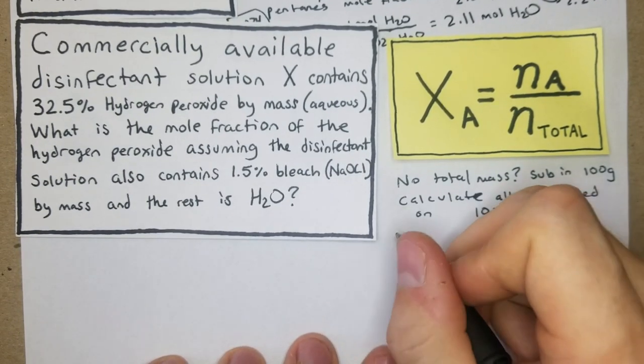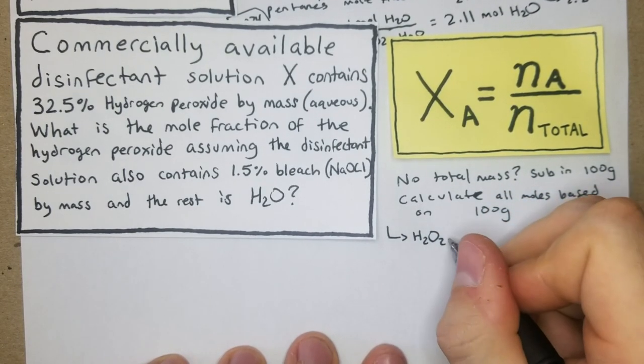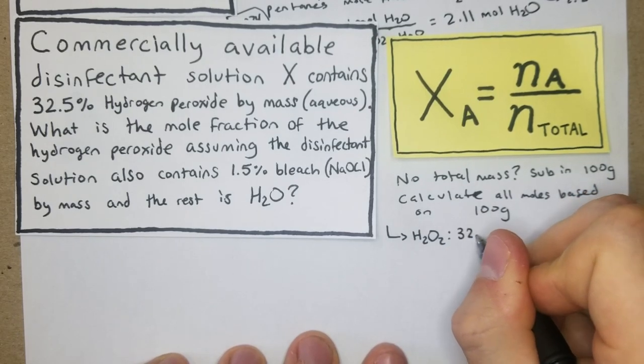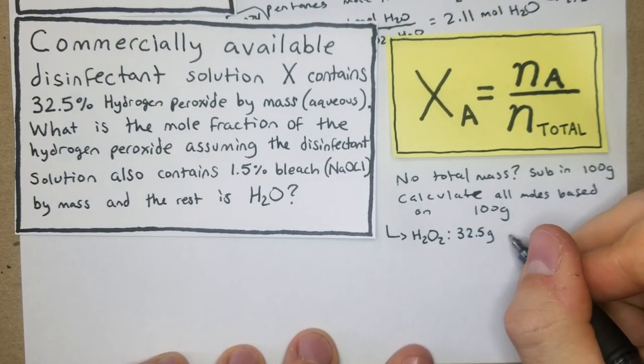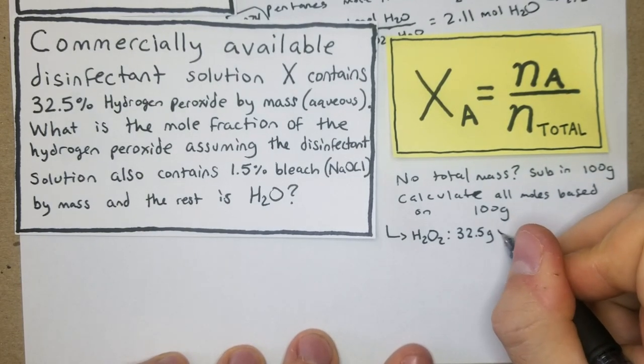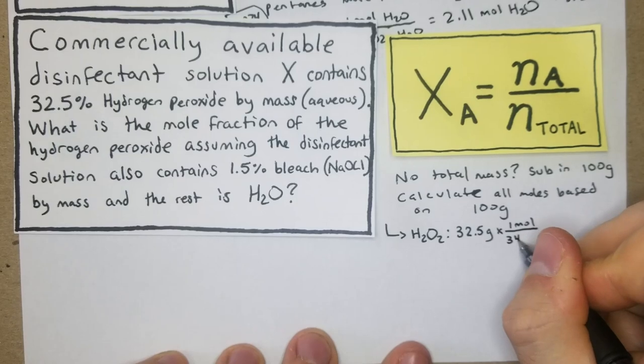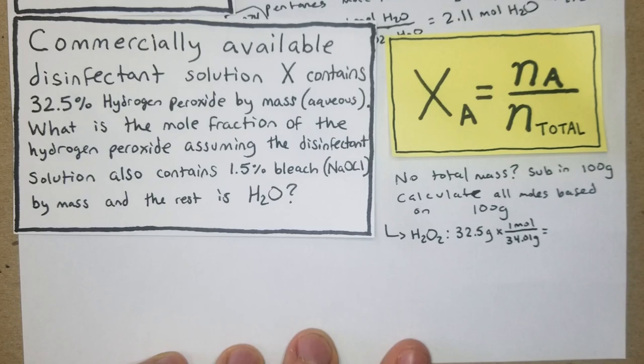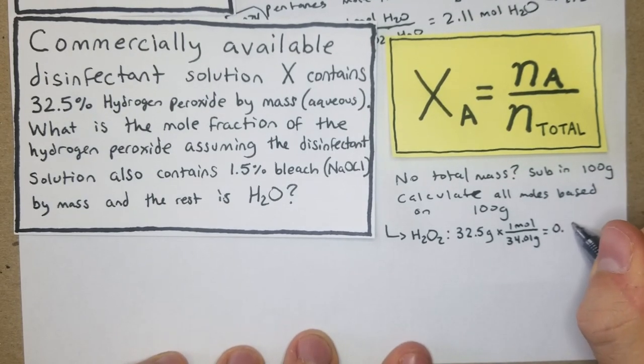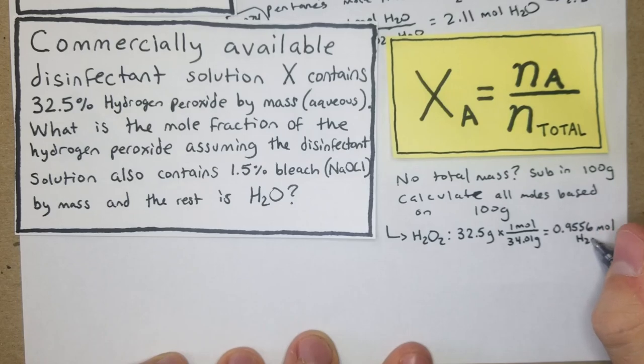First of all, we'll do H2O2, which is the hydrogen peroxide. We have 32.5 grams because it's our percent, and then we're going to do one mole per 34.01 - that is the molar mass. For that we're going to get 0.9556 moles of H2O2.